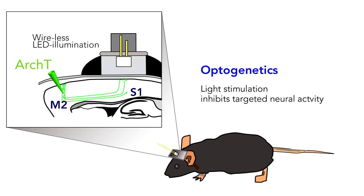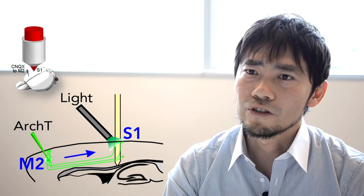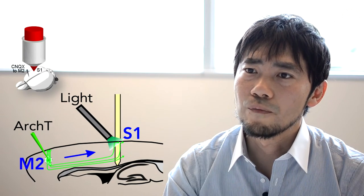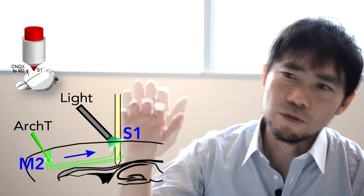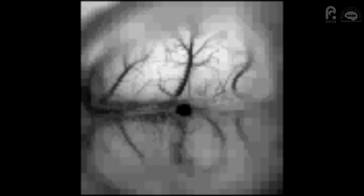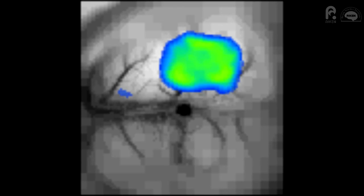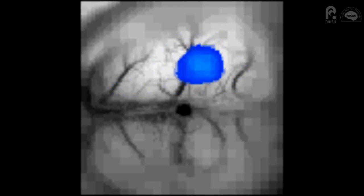One of the crucial methods is controlling neural activity by optogenetics. In this study we use ArchT, which is a light-sensitive ion pump and works to inhibit the neural activity. By using ArchT, we can inhibit specific neurons with light.